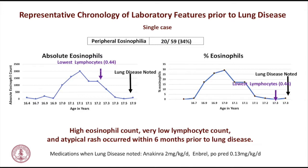Eosinophil counts up to 2,000 with 28% have been observed. Some case reporters have described a pruritic, eczematous rash that is horrifying and incredibly difficult. One case was tried on Xolair for the urticarial nature — it didn't work. On biopsy, eosinophils are not seen even with peripheral eosinophilia; it is a nonspecific dermatitis. Some have had purple splotches, one of which was biopsied and was also nonspecific. This occurs in the prodromal period before lung disease is recognized.